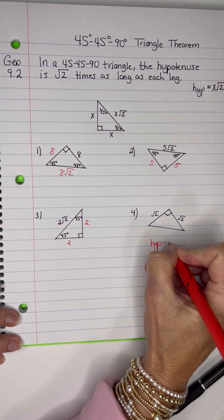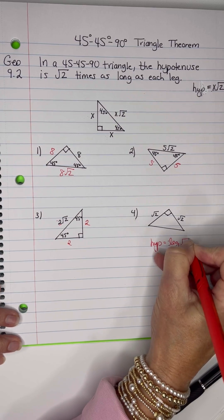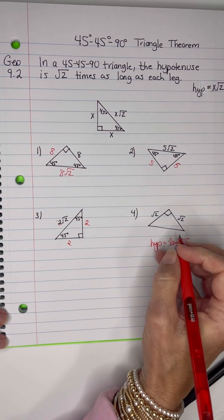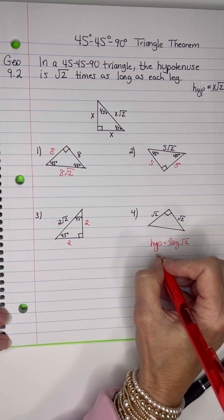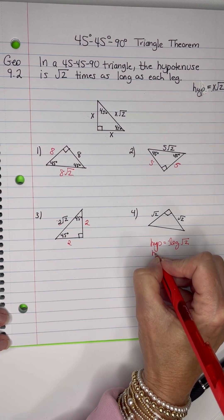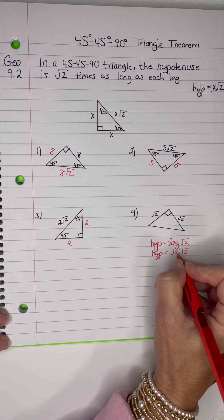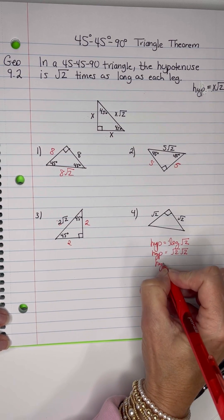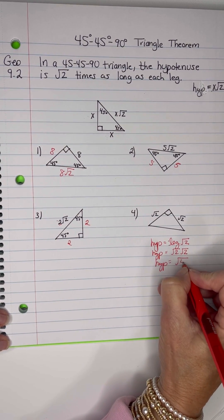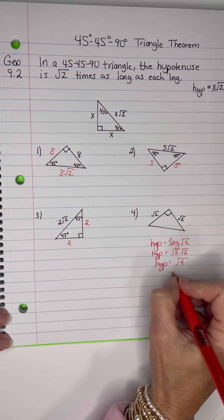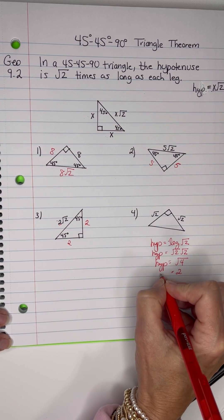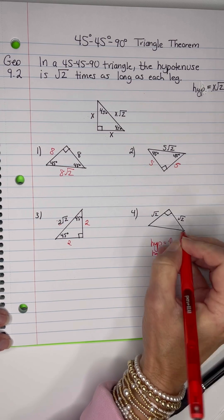The hypotenuse equals the leg times root 2, and then put down what I know—this is the hypotenuse I'm looking for. The hypotenuse will equal the leg, which is root 2, times root 2. Well, we've already learned how to do that. So my hypotenuse is root 4, and the square root of 4 is 2. So the hypotenuse is 2.